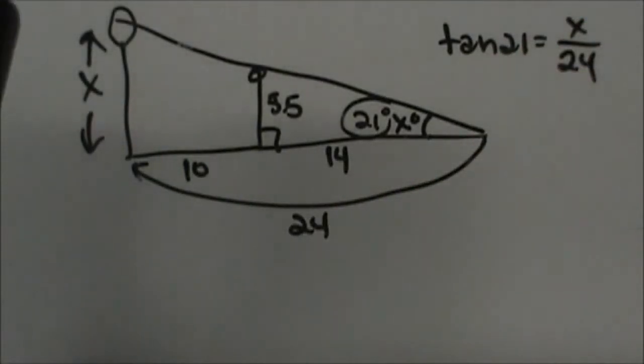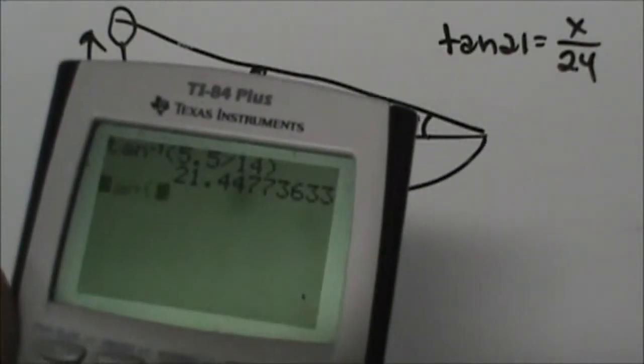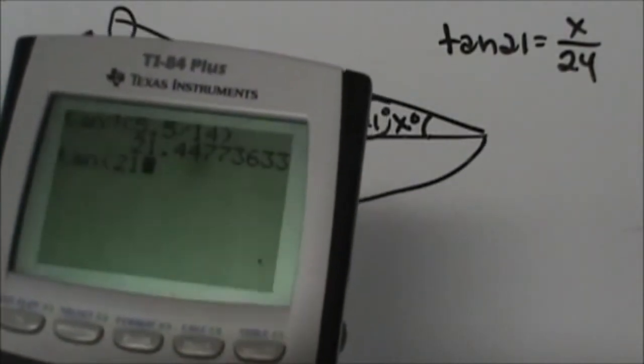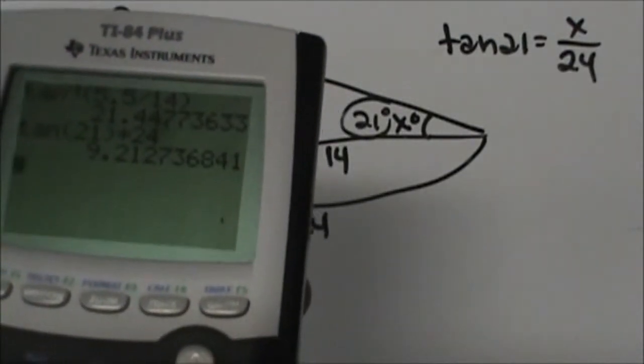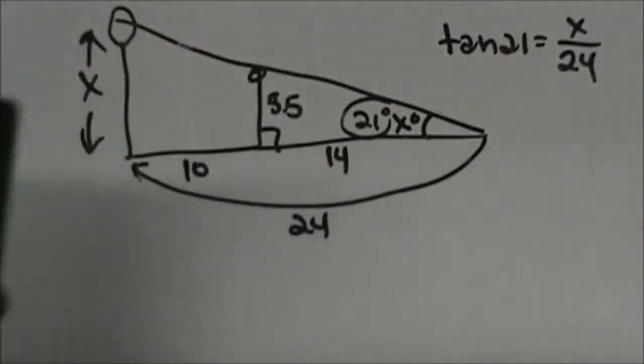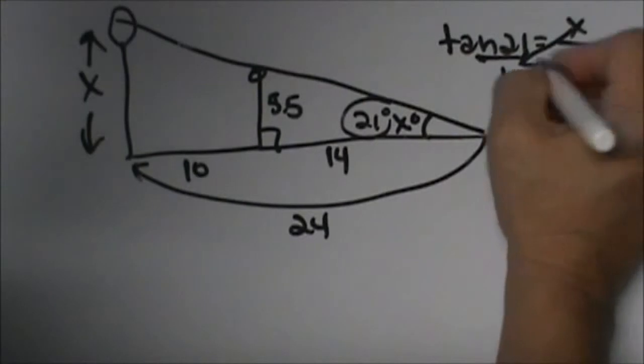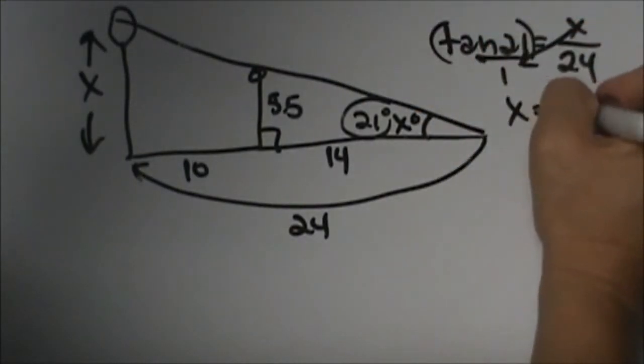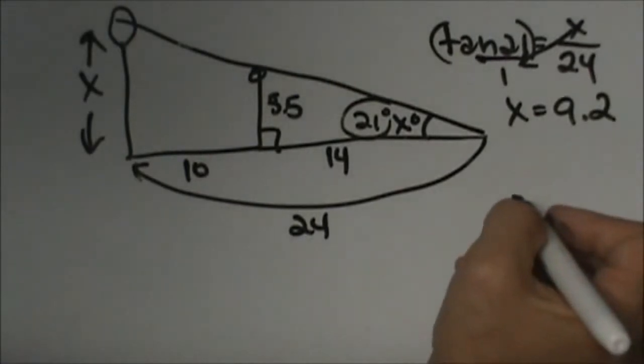Now this is a pretty easy problem because we're not even going to have to divide. So the tangent of 21 times 24 when we do our cross product is 9.2. So cross product we get x is equal to 9.2, and this unit measure was in feet.